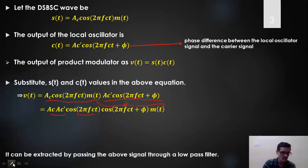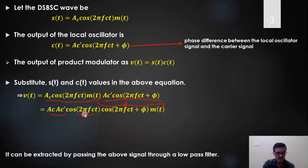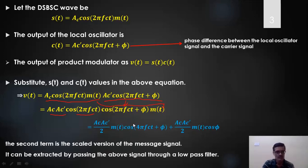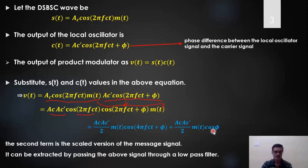Applying the trigonometric identity cos A · cos B = ½[cos(A+B) + cos(A−B)], we get a simplified equation. The first term has a certain amplitude with m(t) multiplied by cos(4πfc·t + φ) — that is a 2fc component, meaning m(t) is shifted by 2fc in frequency. The second term represents (Ac·Ac'/2)·m(t)·cos(φ).